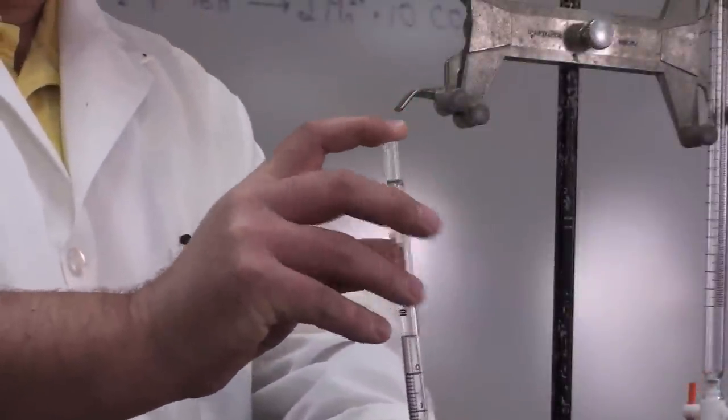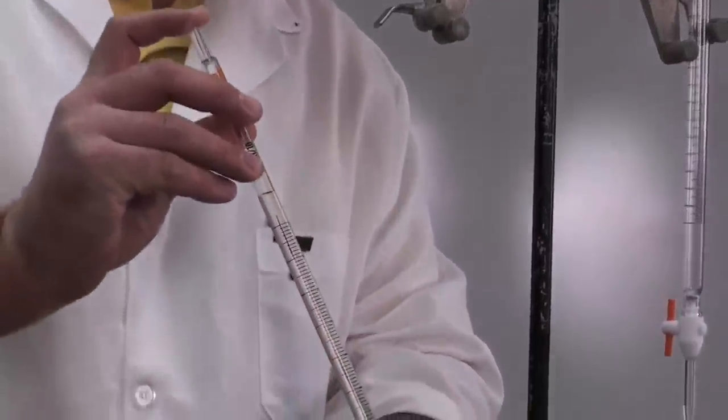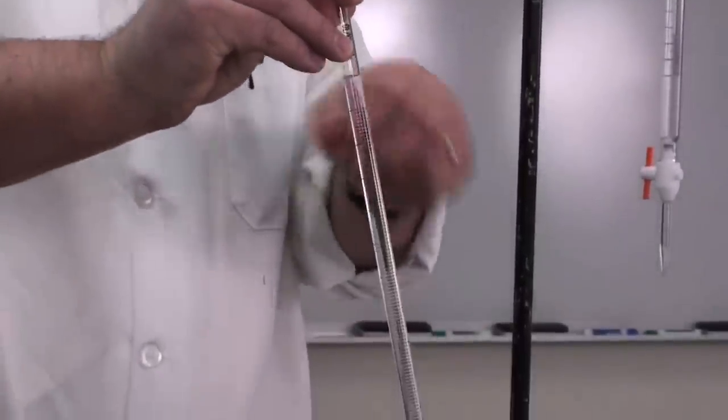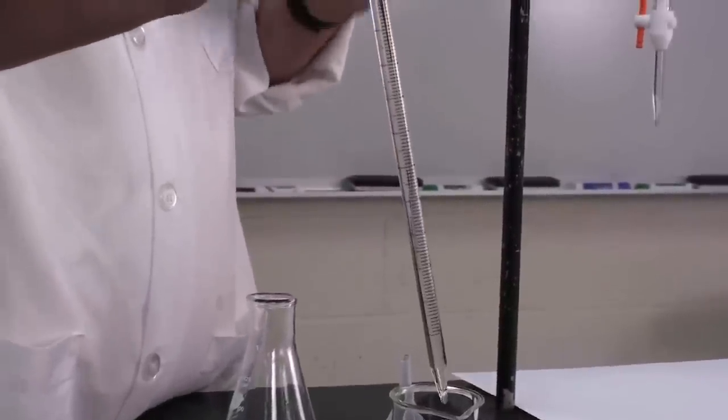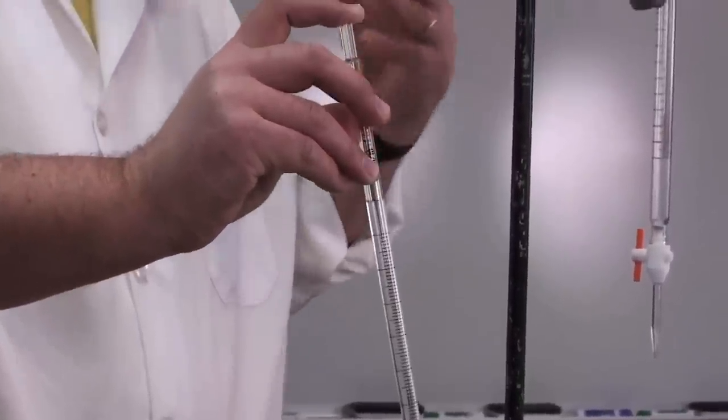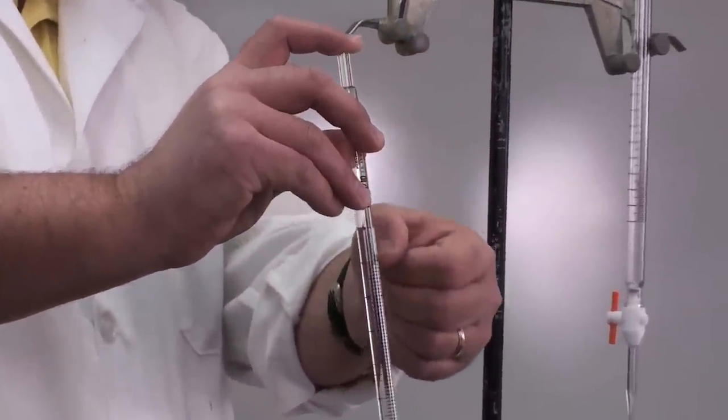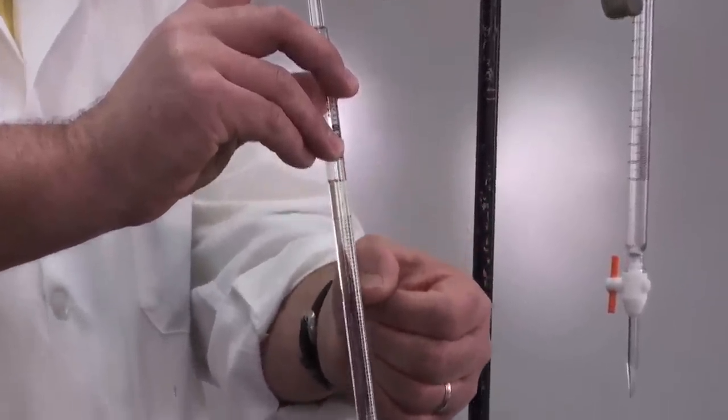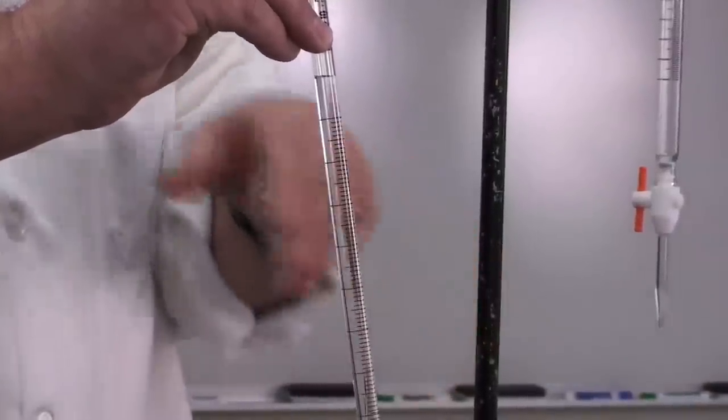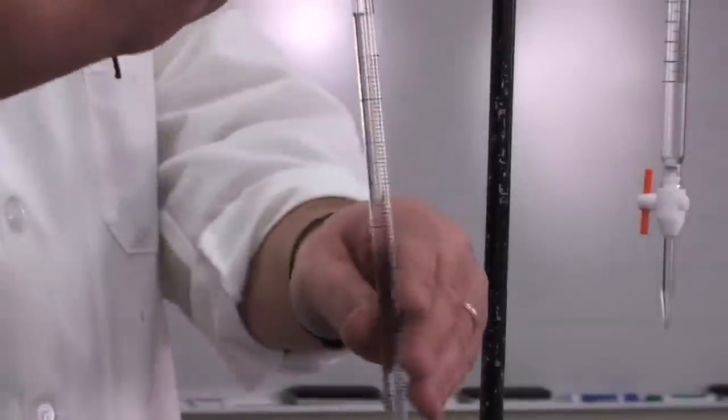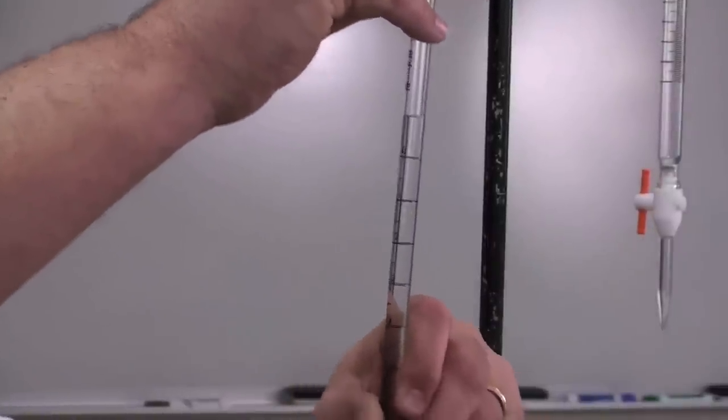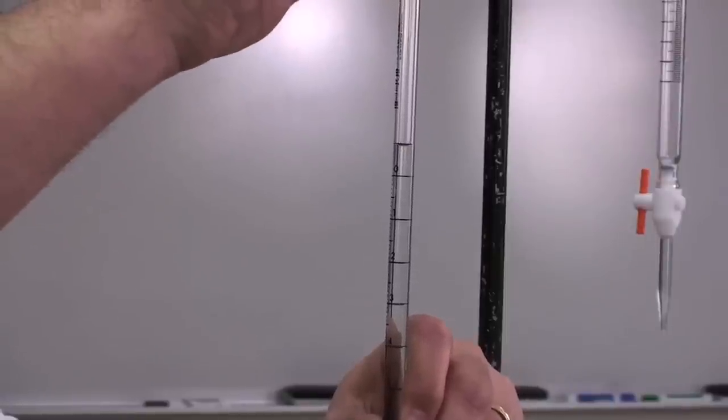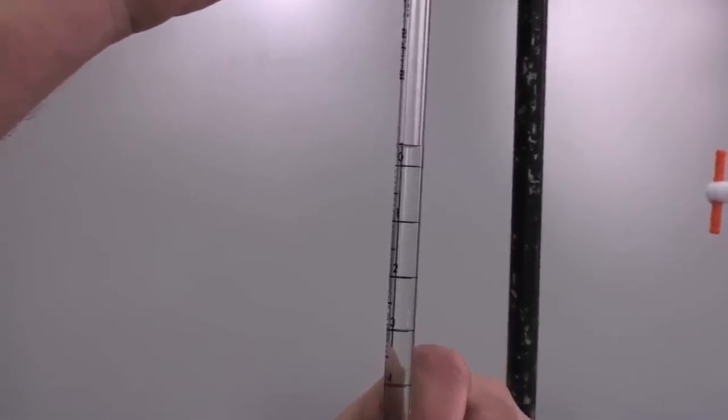You squeeze the bulb, stick the pipette into the solution, then draw the solution up. We're going to pipette 10 milliliters, so I want to take it all the way to the top, a little above. Then I take the bulb off and use my finger to stop the flow of the reagent. Notice the graduations run from 0 to 10 in 1 milliliter increments, with smaller marks every one-tenth of a milliliter.